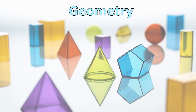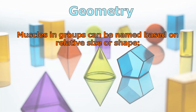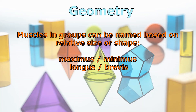Muscles and groups can also be named based on who's bigger or smaller, longer or shorter within the group. Terms like maximus and minimus — you've probably heard of gluteus maximus, and there's also a gluteus minimus; they're both in the buttocks, but the minimus is smaller. We also have longus for a longer muscle in a group — like the adductor longus — versus brevis, which comes from the word 'brief,' meaning short. So longus means long and brevis means short.